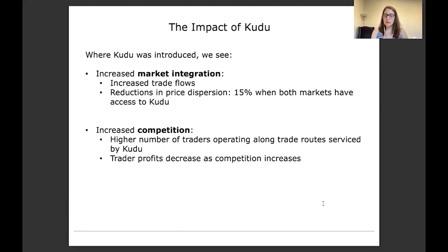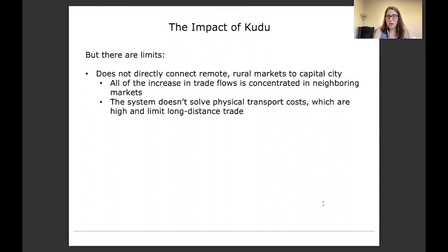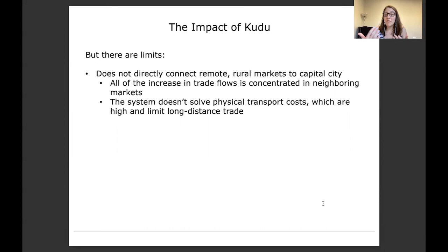There are some limits to this platform. One of the goals was to connect remote rural smallholder farmers directly to markets, directly to buyers in capital cities. But we're not seeing that direct connection. We're not seeing that it's directly connecting remote rural markets to capital cities. Instead, all of the increase in trade flows we observe is concentrated in fairly nearby or neighboring markets. Why is that? Because the system, though it's solving this problem of matching or search, is not solving the physical transportation costs. Roads are still often fairly low quality. Transport costs are still quite high. That limits the ability to do long-distance trade, even if buyers and sellers know about each other. It still might not be worth it to directly transport to Kampala from a remote area if transport costs are high.